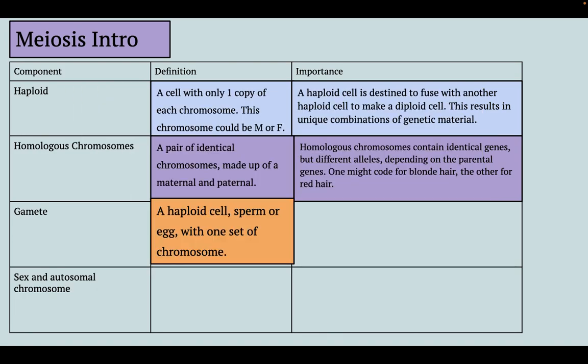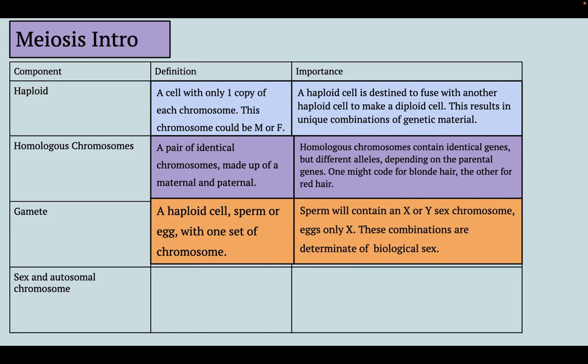A gamete is our definition of a haploid cell — sperm or egg — with one complete set of chromosomes. Sperm is always going to be the gamete that determines sex. Most biological males are XY for the sex chromosomes, and females are usually XX. So the combination of sperm and egg will determine the biological sex of an offspring.